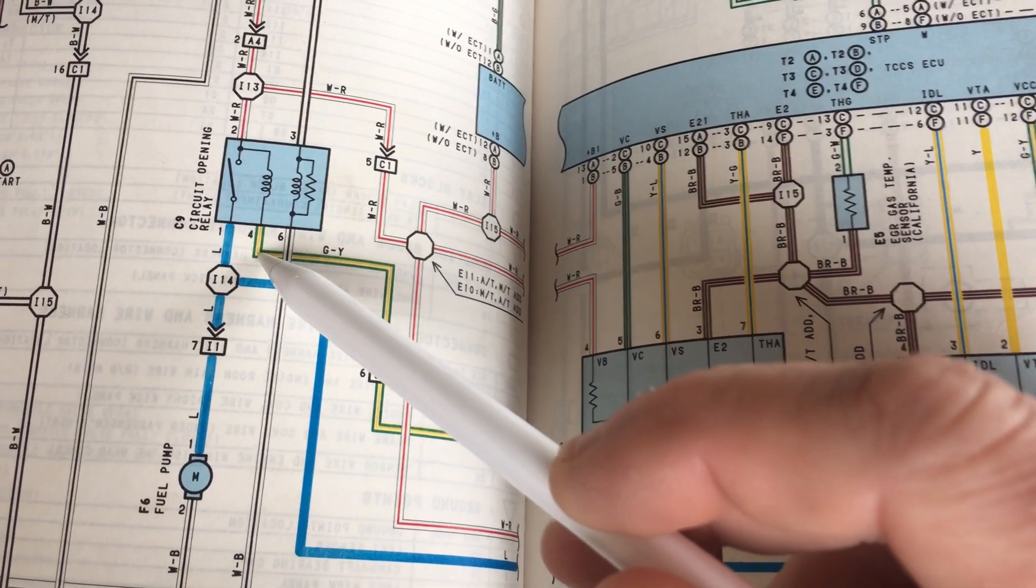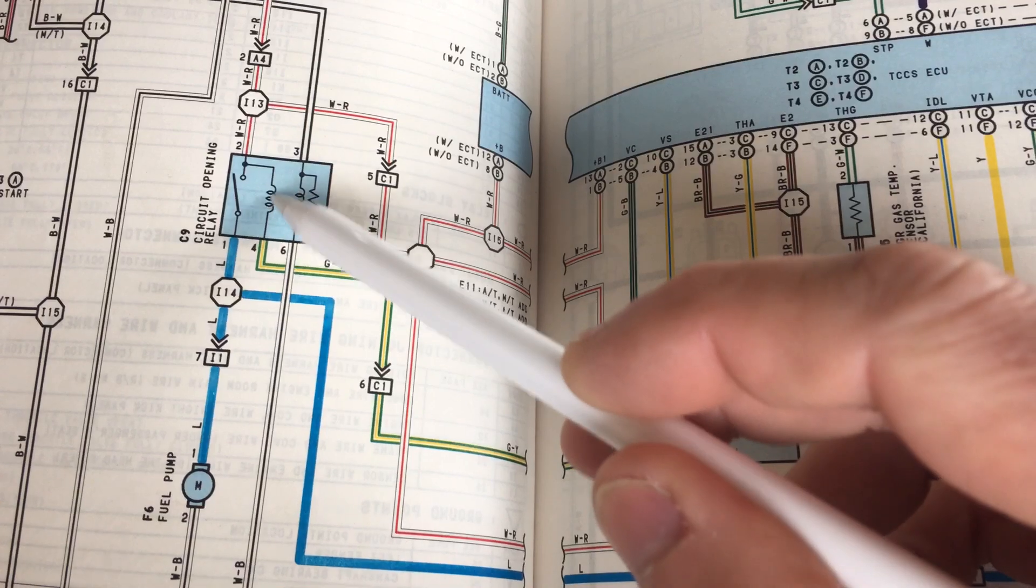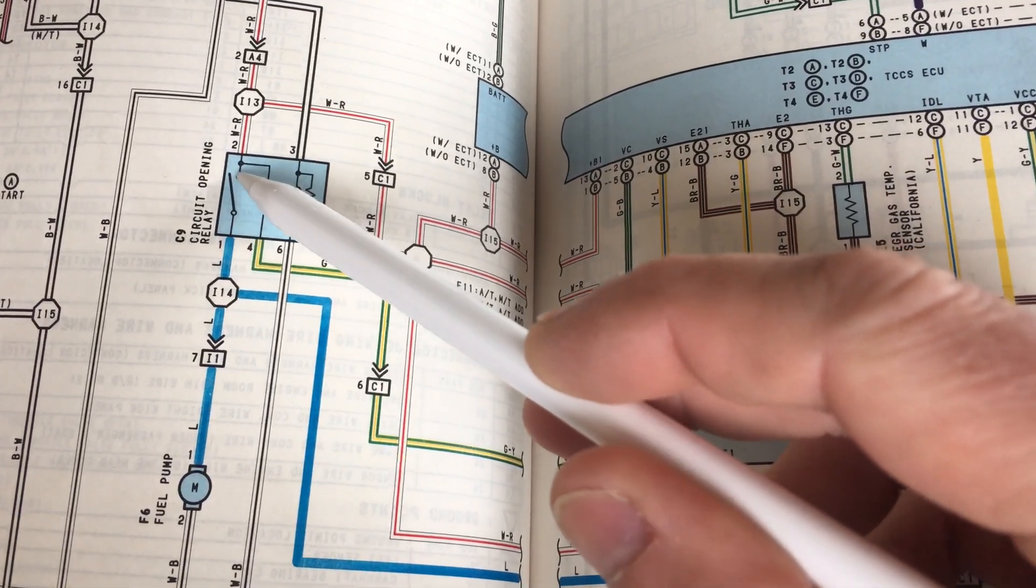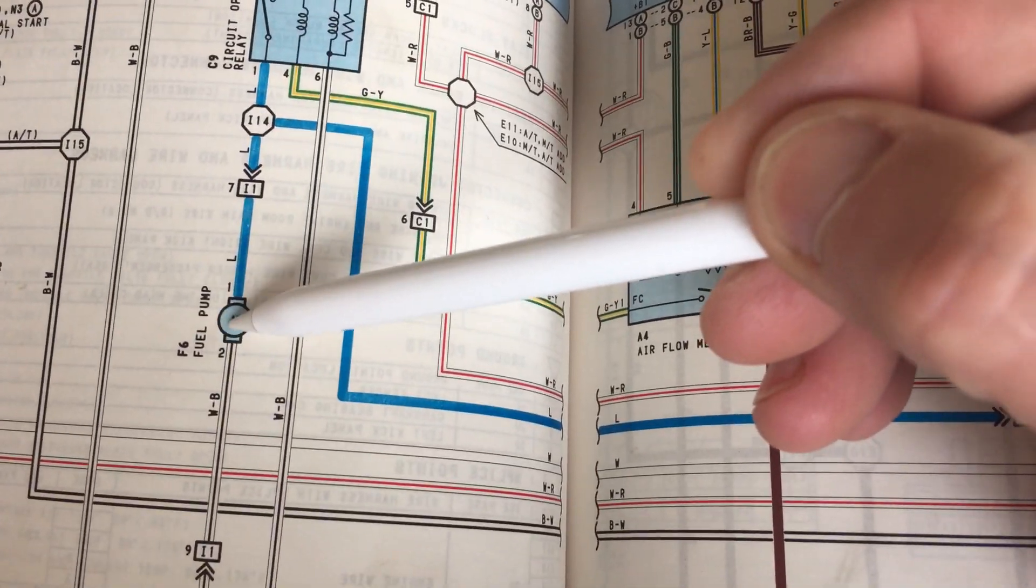The green-yellow wire energizes this coil inside the relay and it closes, which provides power down to your fuel pump.